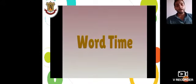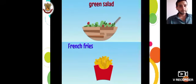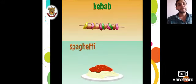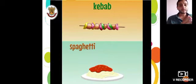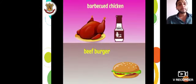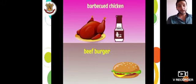Now it's Word Time. Green Salad. Repeat after me: Green Salad. French Fries. French Fries. Kebab. Kebab. Kebab is pieces of meat with vegetables. Spaghetti. Spaghetti. Barbecue Chicken. Barbecue Chicken. Barbecue Chicken.